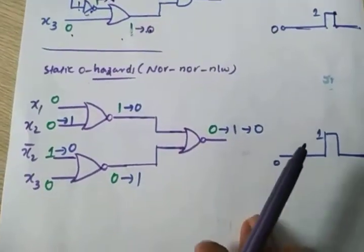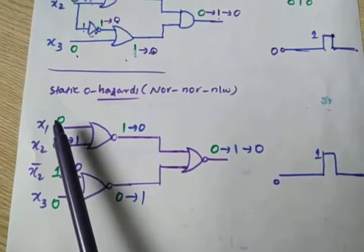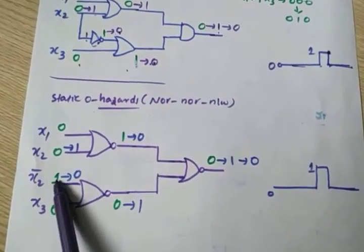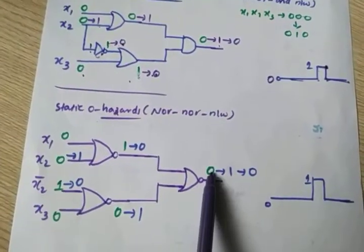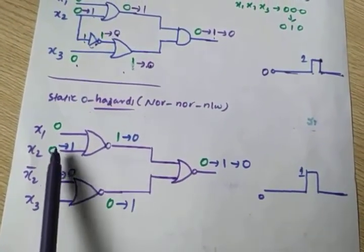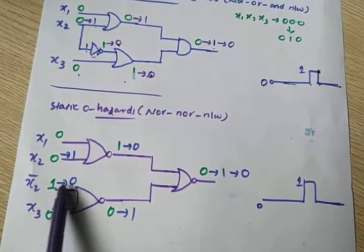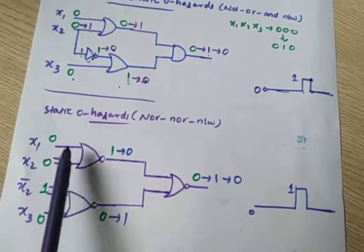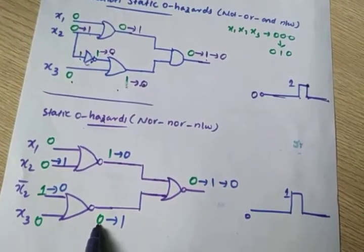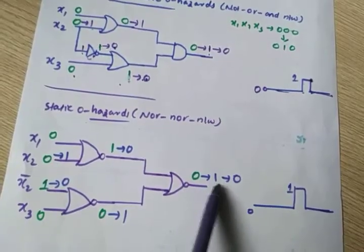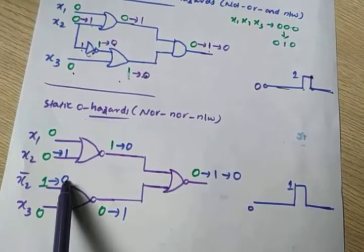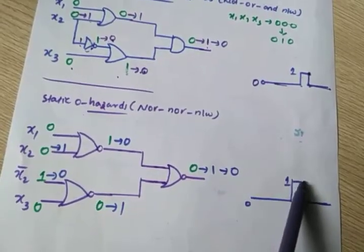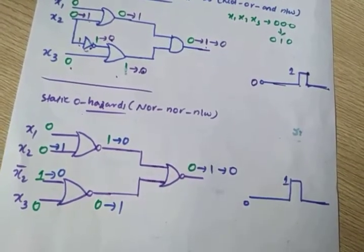This is another circuit for static hazard explanation using a NOR gate. Here initially 0, 0, 0. X2-bar is 1. So 0, 0, 1 — output is 1, 0, 0 — so output is 0. I am getting 0 output. Now I am changing X2 to 1. But X2-bar should be 0 — but this won't happen immediately because there is a propagation delay. So at the same time: 0, 1 — output is 0; this is 1, 0 — output is 0; 0, 0 — output becomes 1. Now it is going to 1. After the propagation delay, this 1 becomes 0, output becomes 1, then 0, 1 — output becomes 0. So 1 is going to 0 — this is static 0 hazard.